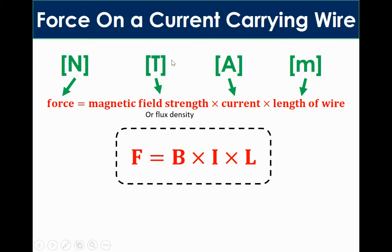That is measured in Tesla, which is obviously not named after the car company, but it is the same word. It's actually named after Nikola Tesla. He was a Russian scientist. I is current measured in amperes and L is the length of wire in meters.